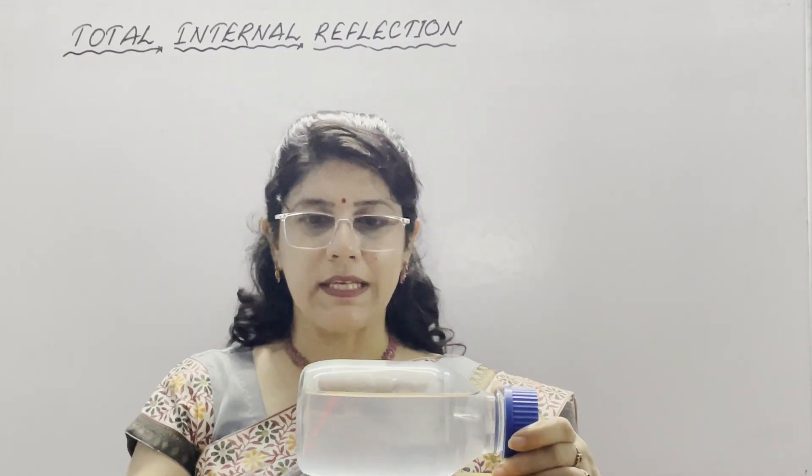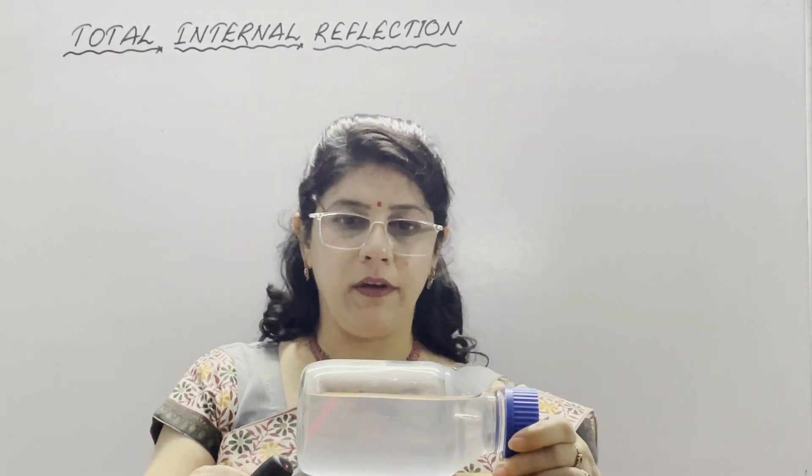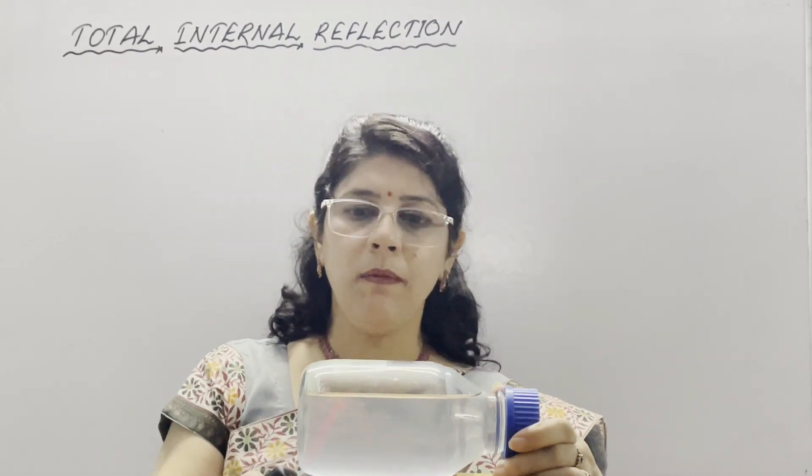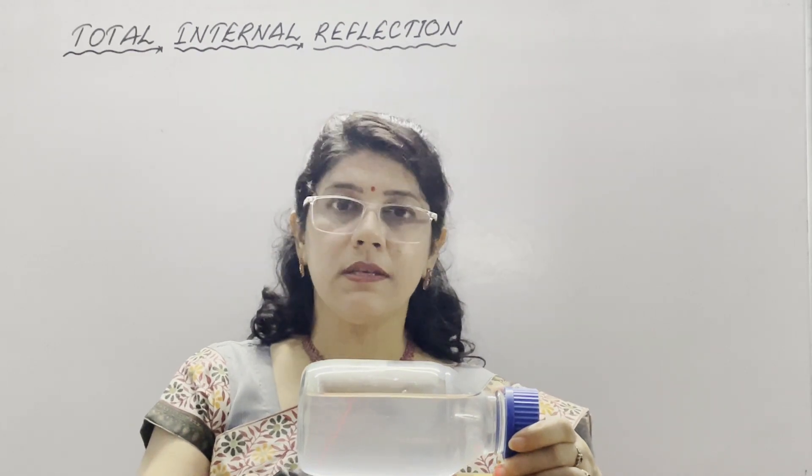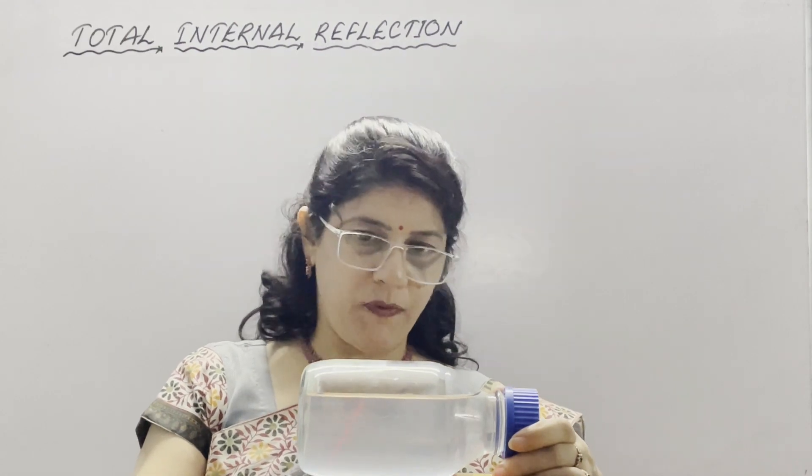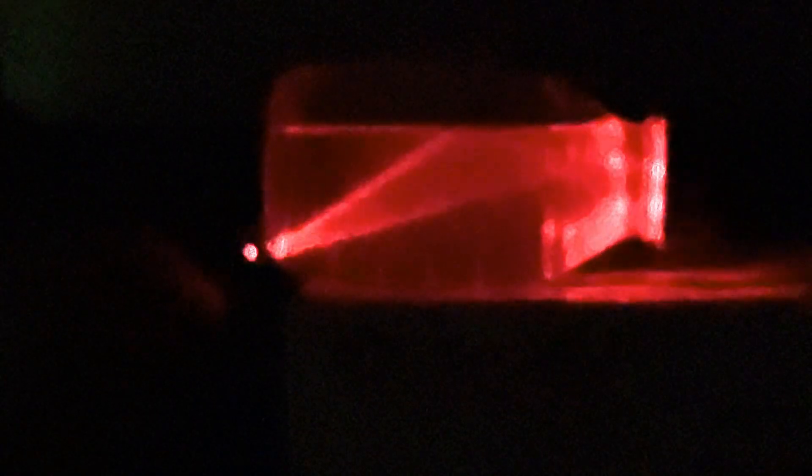To demonstrate total internal reflection, I use laser light inside a bottle which is three-fourths filled with water. Rays entering from a denser medium to a rarer medium — I will perform this experiment in darkness for better clarity. You can see a ray of light incident from denser to rarer medium; part of it is refracted and part reflected back. As I increase the angle of incidence, at a certain point the angle of refraction in the rarer medium is 90 degrees — this is the critical angle. Increasing further, total light rays are reflected back in the same medium with no part refracted — this is TIR, total internal reflection, shown practically.